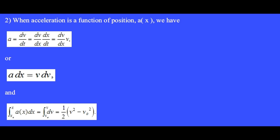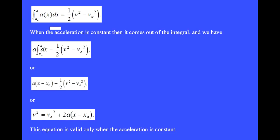We integrate the left side from an initial to a final position, and we integrate the right side from an initial to a final velocity. This integral always gives one half final velocity squared minus initial velocity squared. When the acceleration is constant, then it comes out of the integral, and we have a times x minus x zero equals one half v squared minus v zero squared, or v squared equals v zero squared plus 2a(x minus x zero). This equation is valid only when the acceleration is constant.